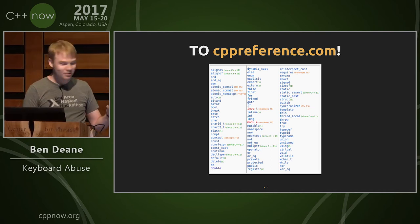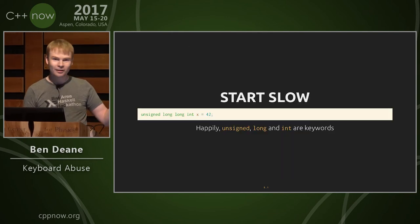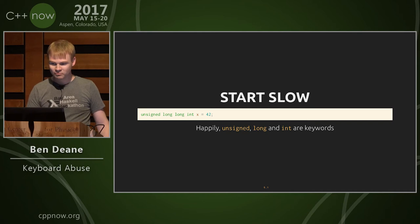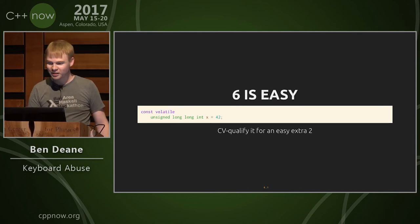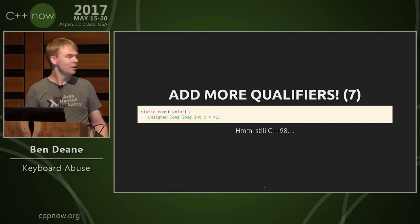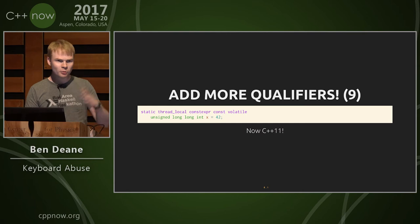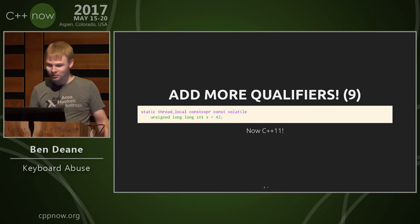All right, so maybe you can do better than me — this is my thought process. Happily, unsigned long are in the keywords. An extra two are easy because of CV qualification — we're used to that. We can add more. We're still C++98 at this point.